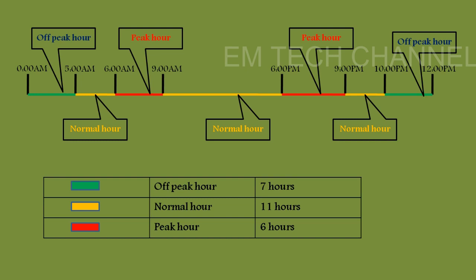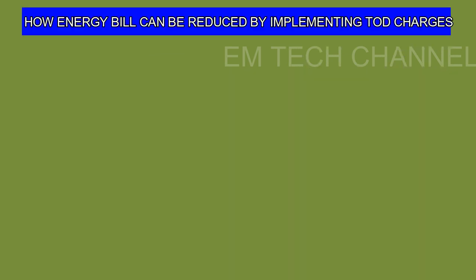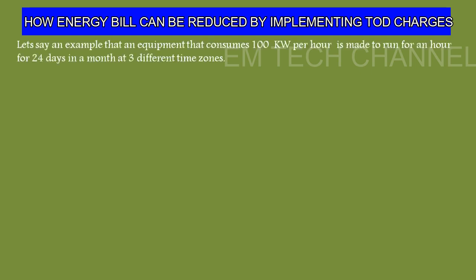Off-peak hours total seven hours per day, normal hours total 11 hours per day, and peak hours total six hours per day. To see how power savings can be achieved using TOD charges, consider an example: suppose I have a high energy consumption machine that consumes 100 kilowatts per hour, running for one hour a day for 24 days in a month. We will now summarize the charges across the three different categories.